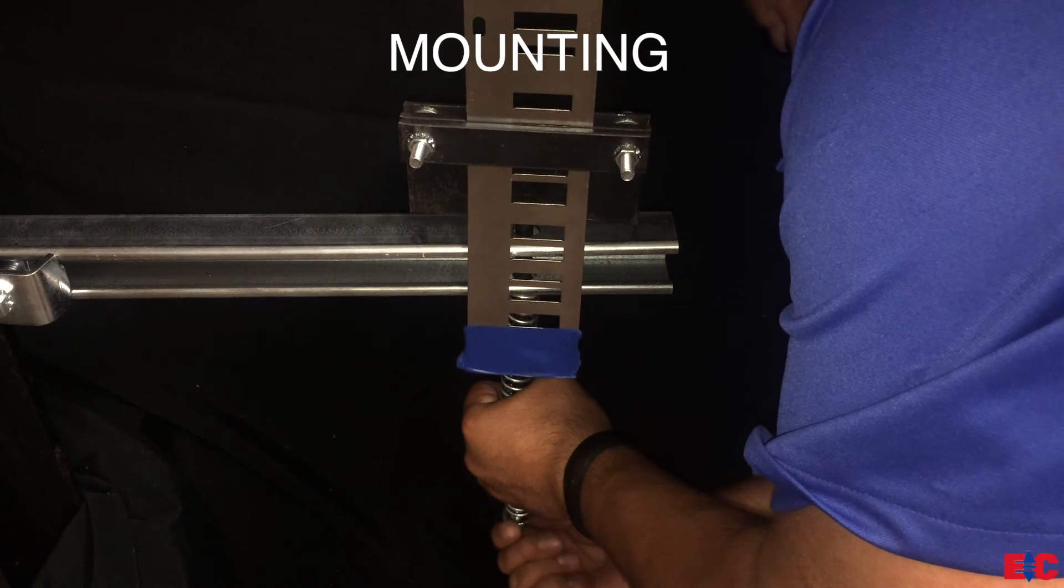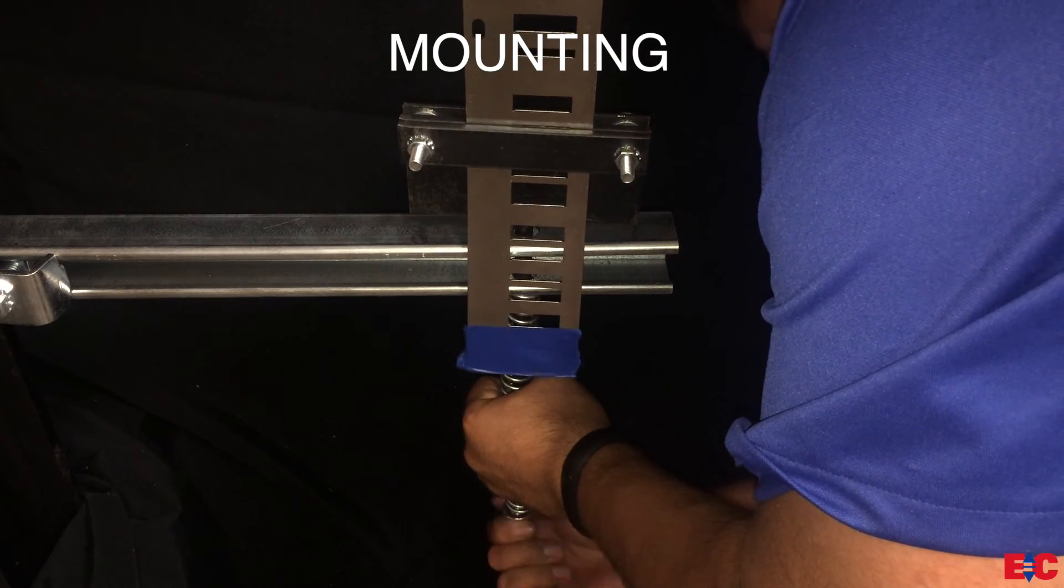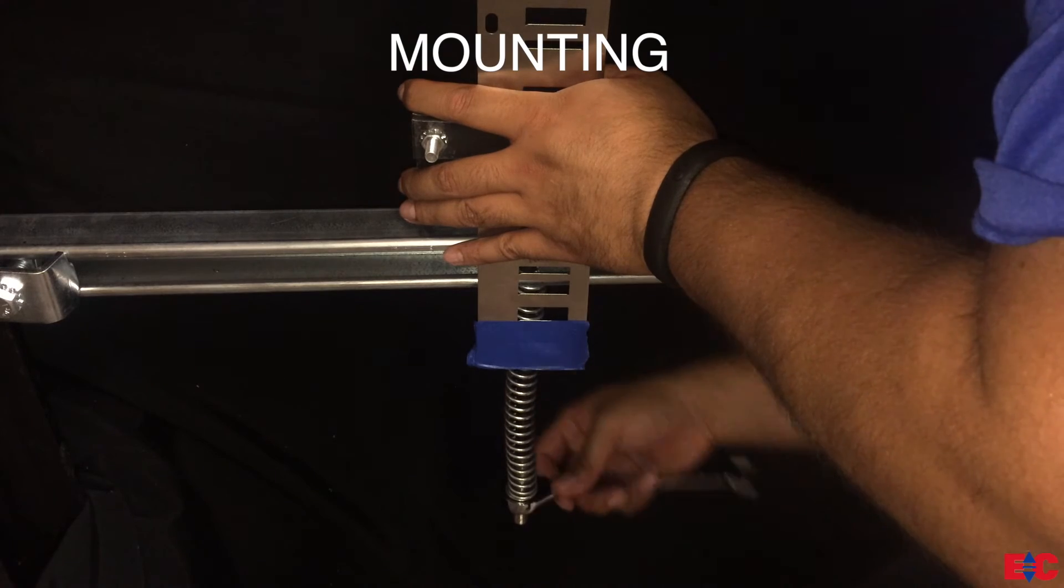Caution, over-torquing the washer nut can cause excess tension on the Lambda tape which may result in twisting or warping.